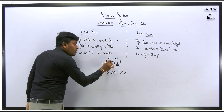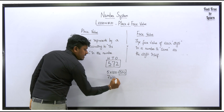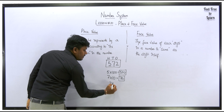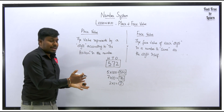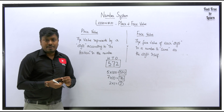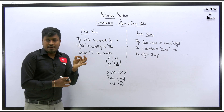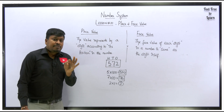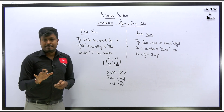If they ask what is the place value of 7, then 7 is at the tens position, so 7 into 10 equals 70. The place value of 7 is 70. Similarly, the place value of 2: since 2 is at the ones position, 2 into 1 equals 2. So the place value of 2 is 2. You have to see the position — multiply by 1, 10, 100, 1000, and so on — that gives you the place value.